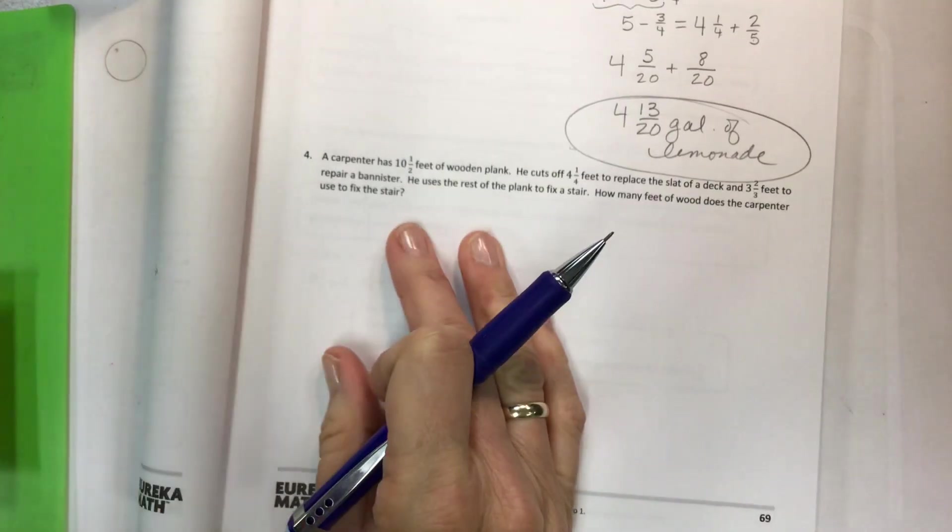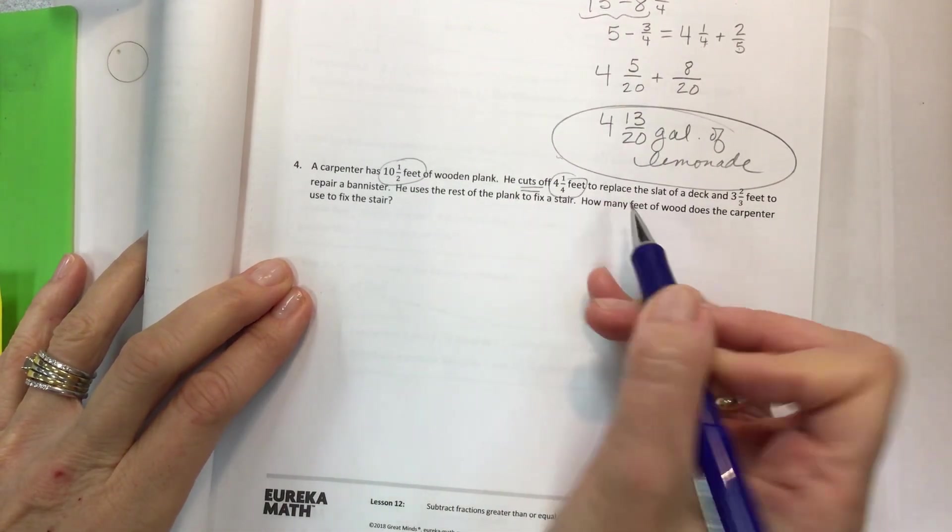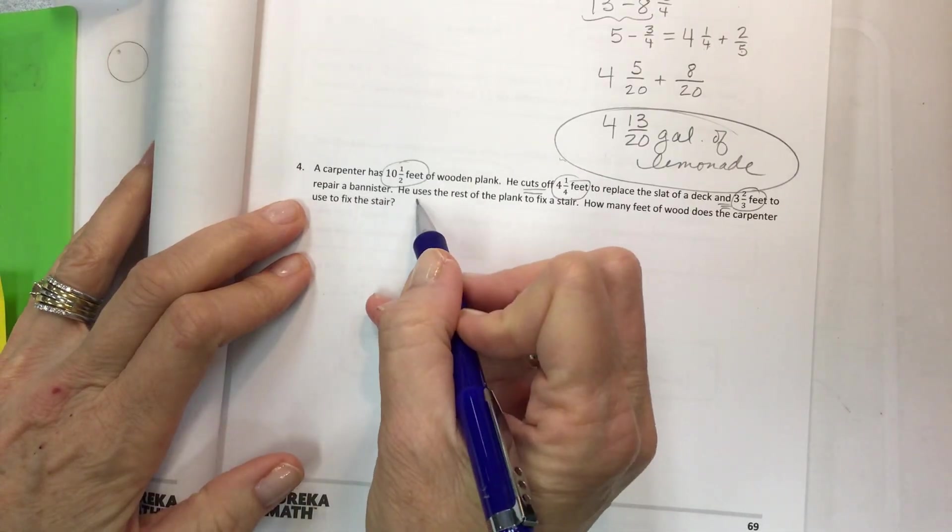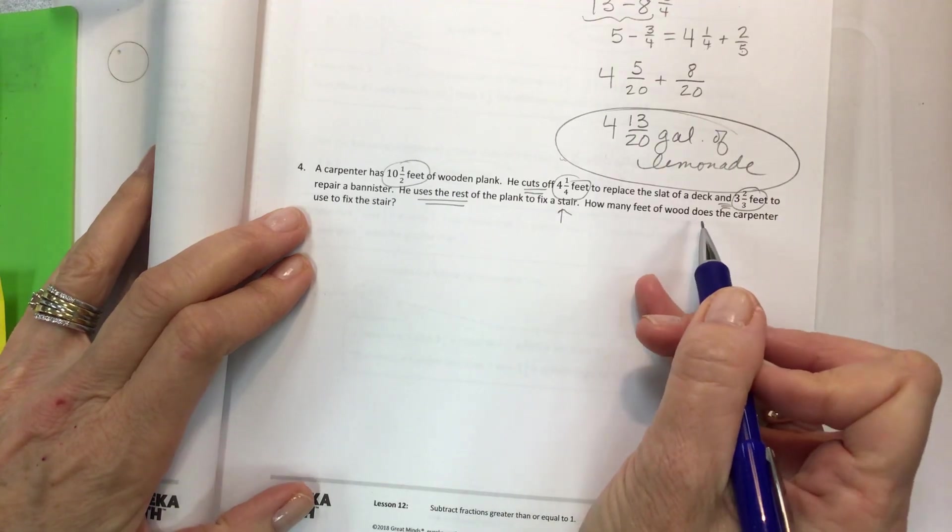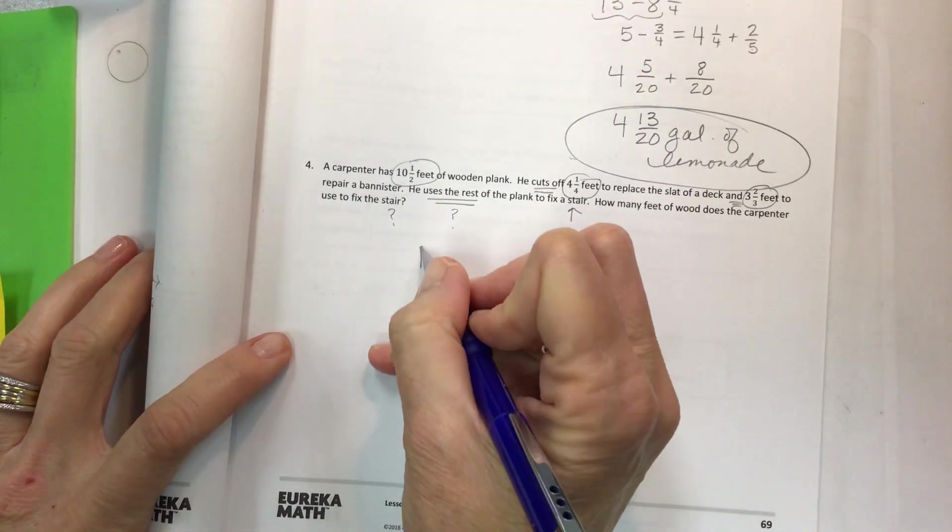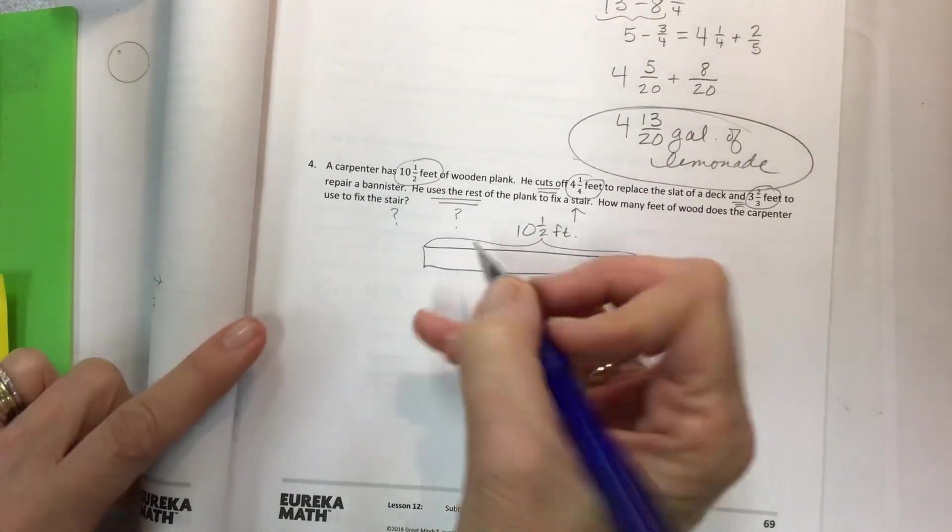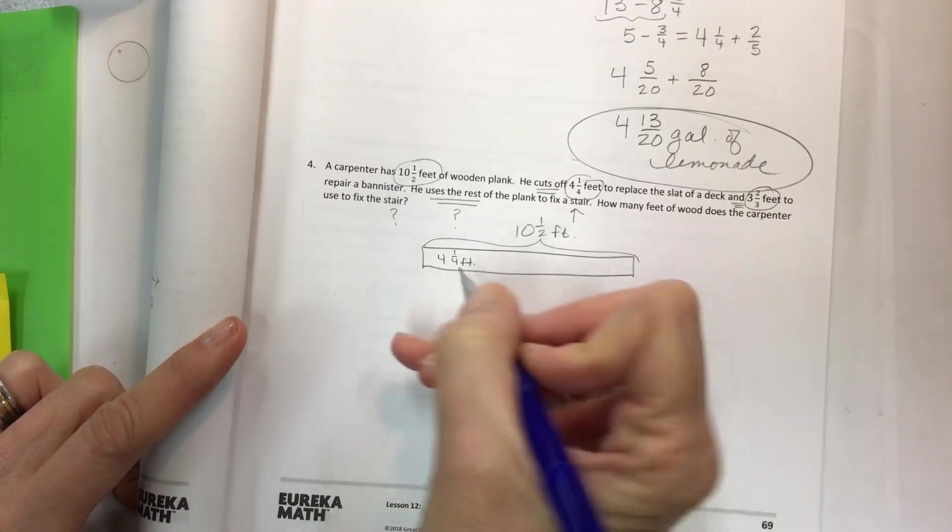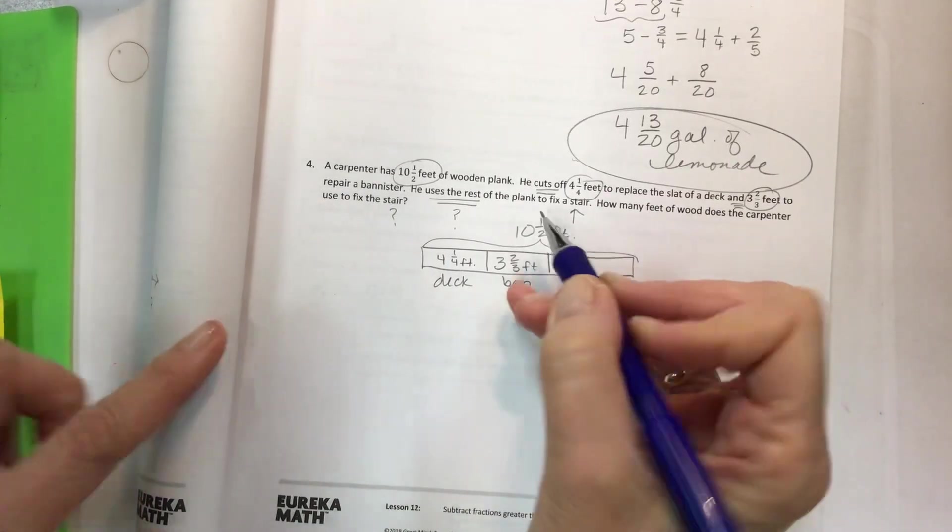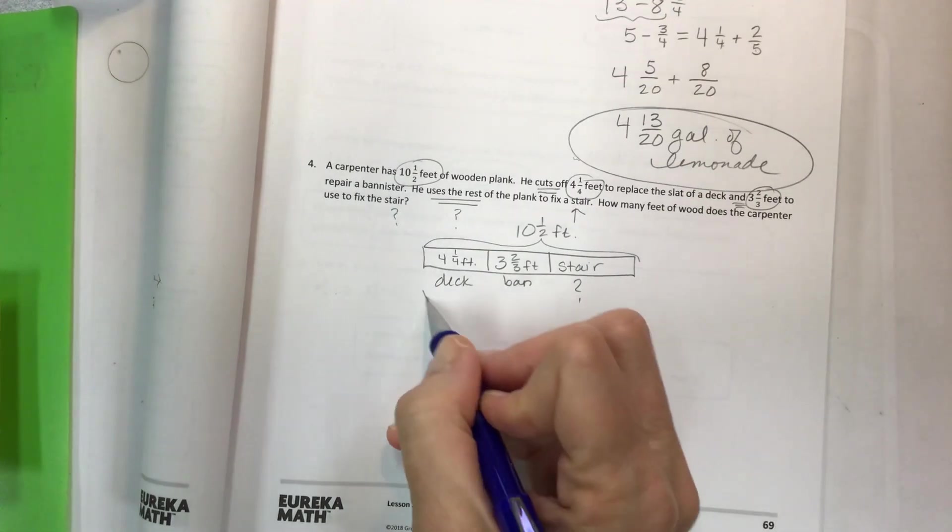Okay. All right. So a carpenter has 10 and a half feet of wooden plank. He cuts off four and a half feet to replace the slat of a deck, and he also cuts off three and two-thirds feet to repair a banister. He uses the rest of the plank to fix a stair. How many feet of wood does the carpenter use to fix the stair? Again, sounds like a tape diagram. So let's put this all together. And we have our 10 and a half feet of wooden plank. And we've got the four and one-fourth feet for the deck. And we've got three and two-thirds feet for the banister. We also have the stair, and that is unknown. So we have all the parts that make the whole. We do know these two.